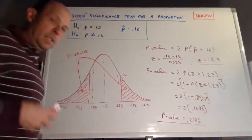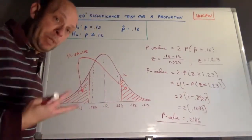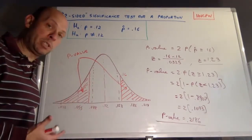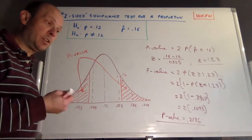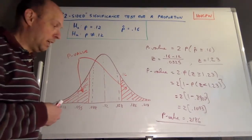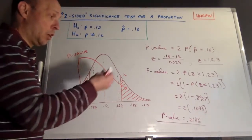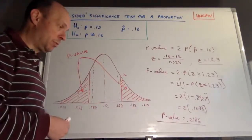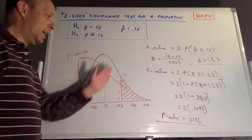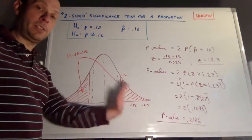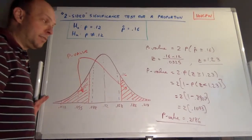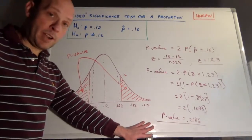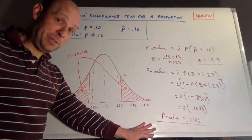Our P-value is 0.2186. Can we be four percentage points away from 12% even if the true proportion is 12%? It looks like yes — in fact, over 20% of the time we'd get a sample this far away, on either side. Clearly, our P-value is greater than our alpha of 0.05, so we know what to do.